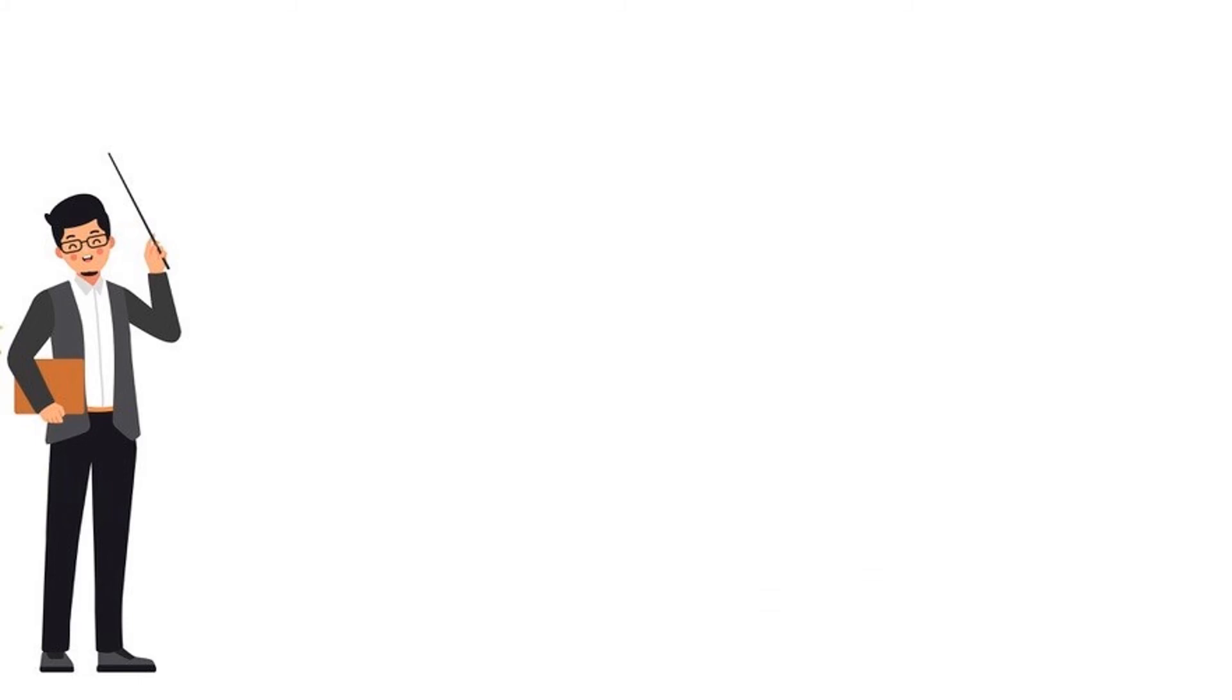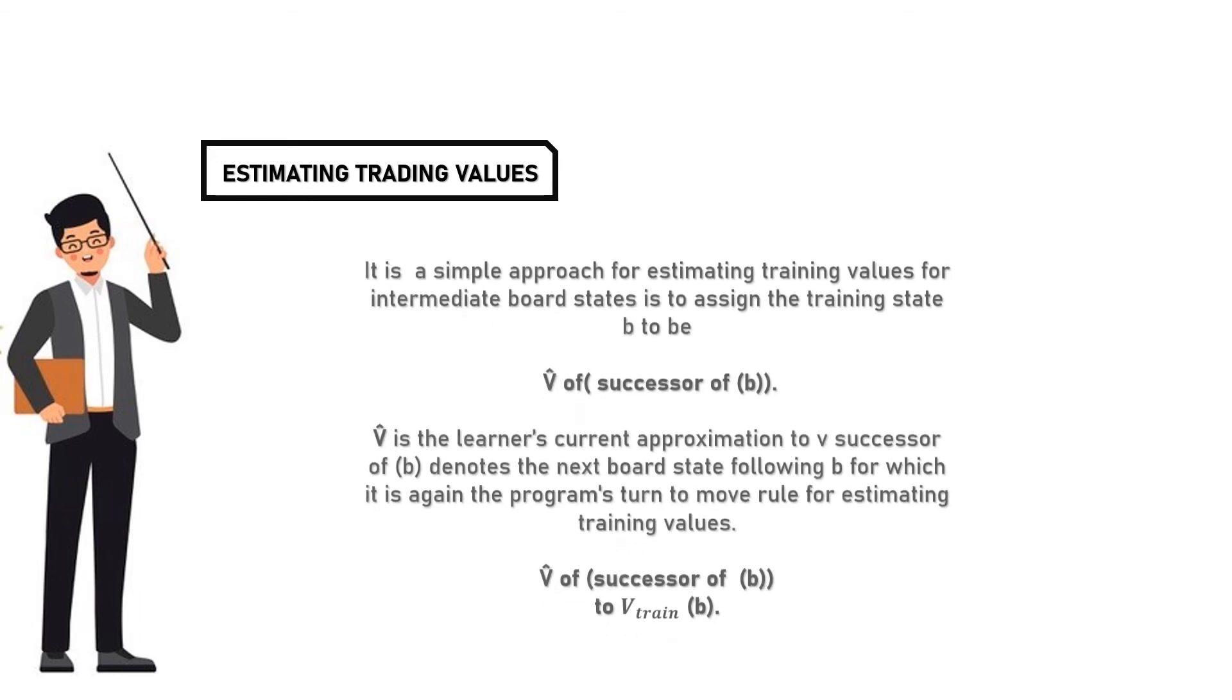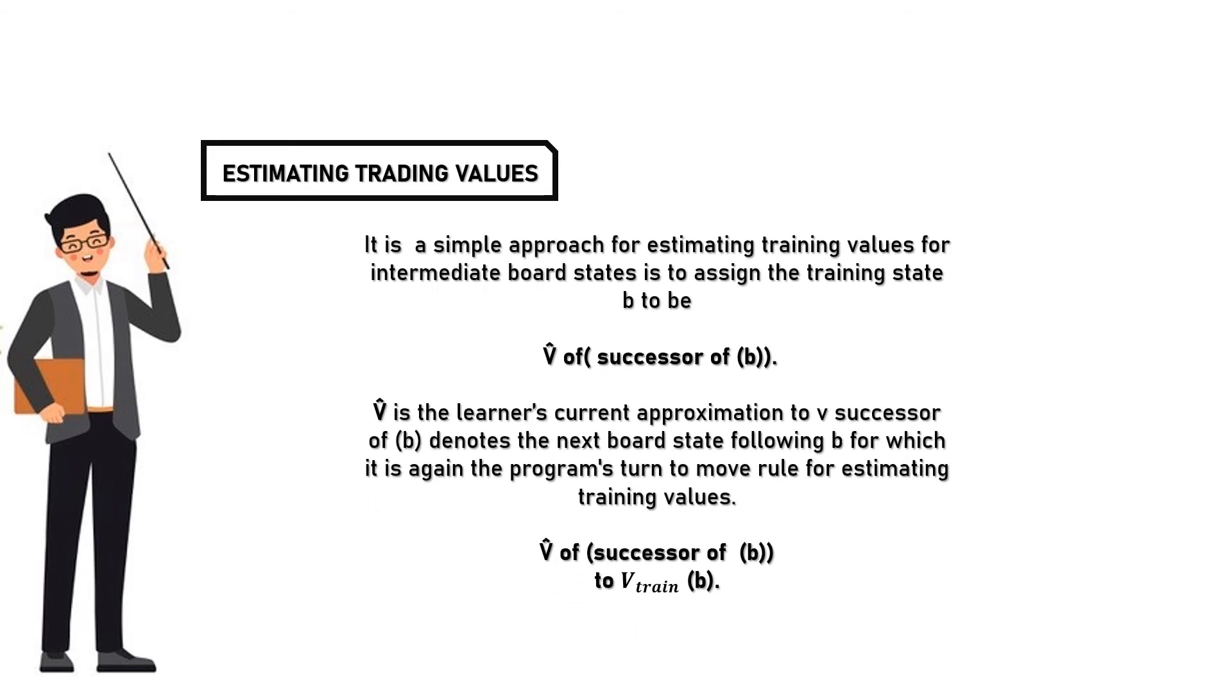To configure this, there are two values. One: estimating training values. It is a simple approach for estimating training values for intermediate board states is to assign the training state b to V̂(Successor(b)), where V̂ is the learner's current approximation to V. Successor(b) denotes the next board state following b for which it is again the program's turn to move. Rule for estimating training values: V̂(Successor(b)) → Vtrain(b).